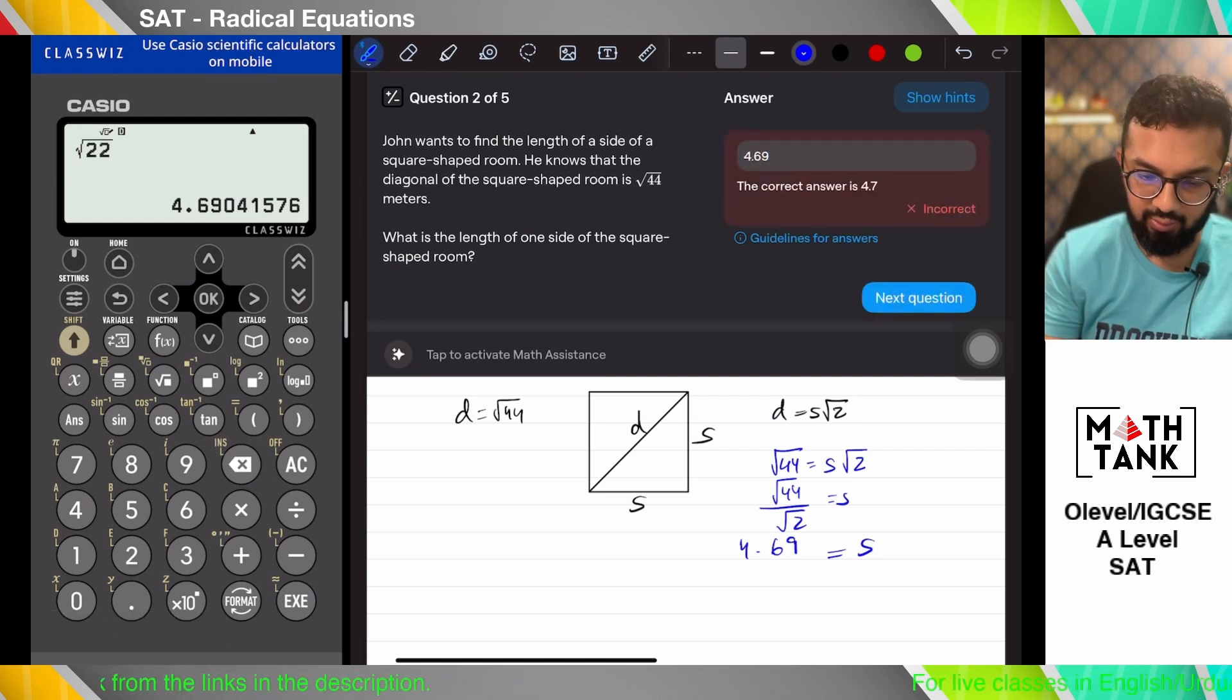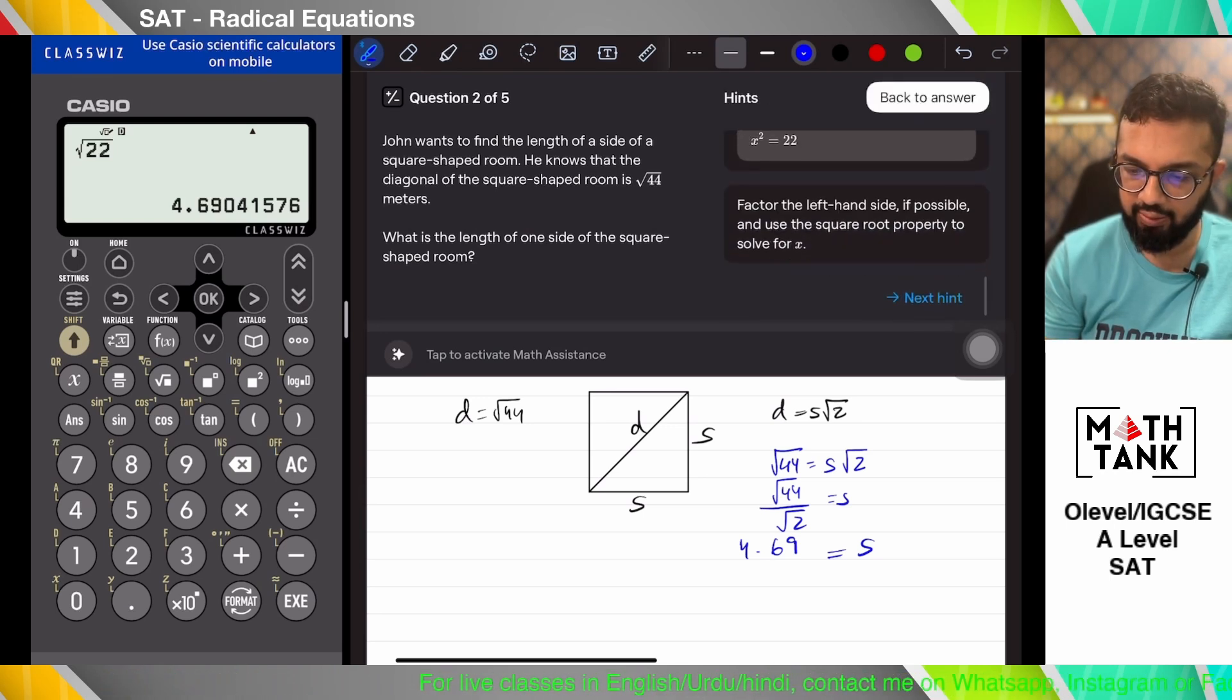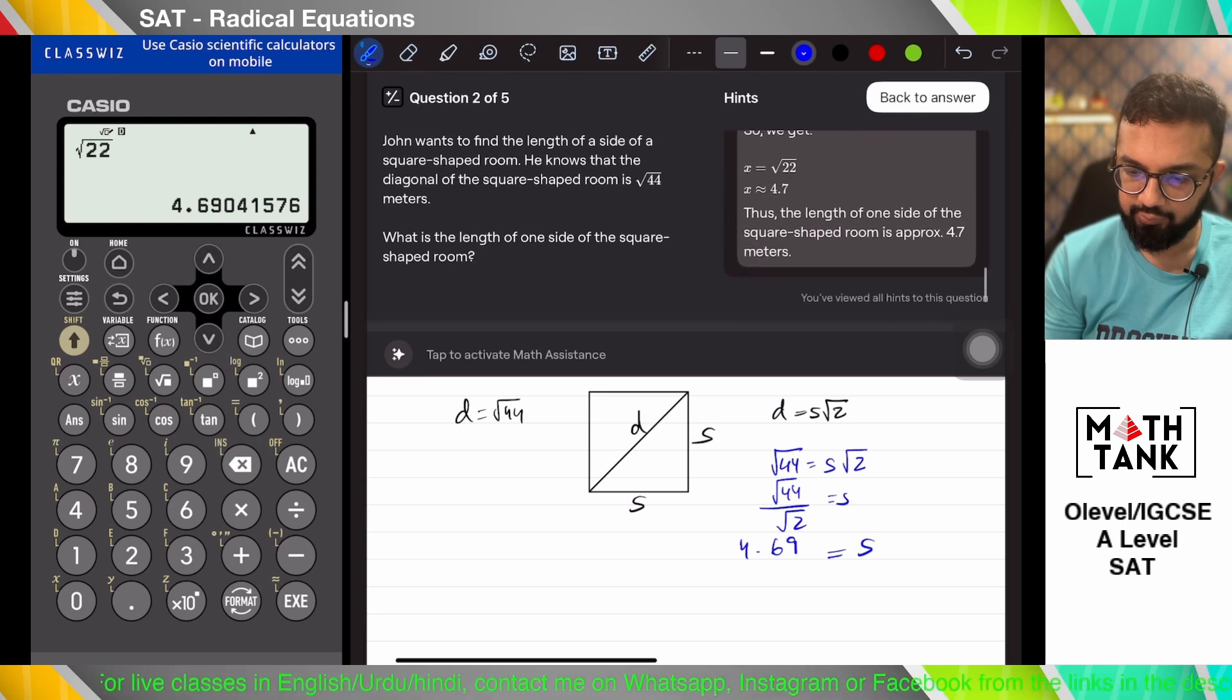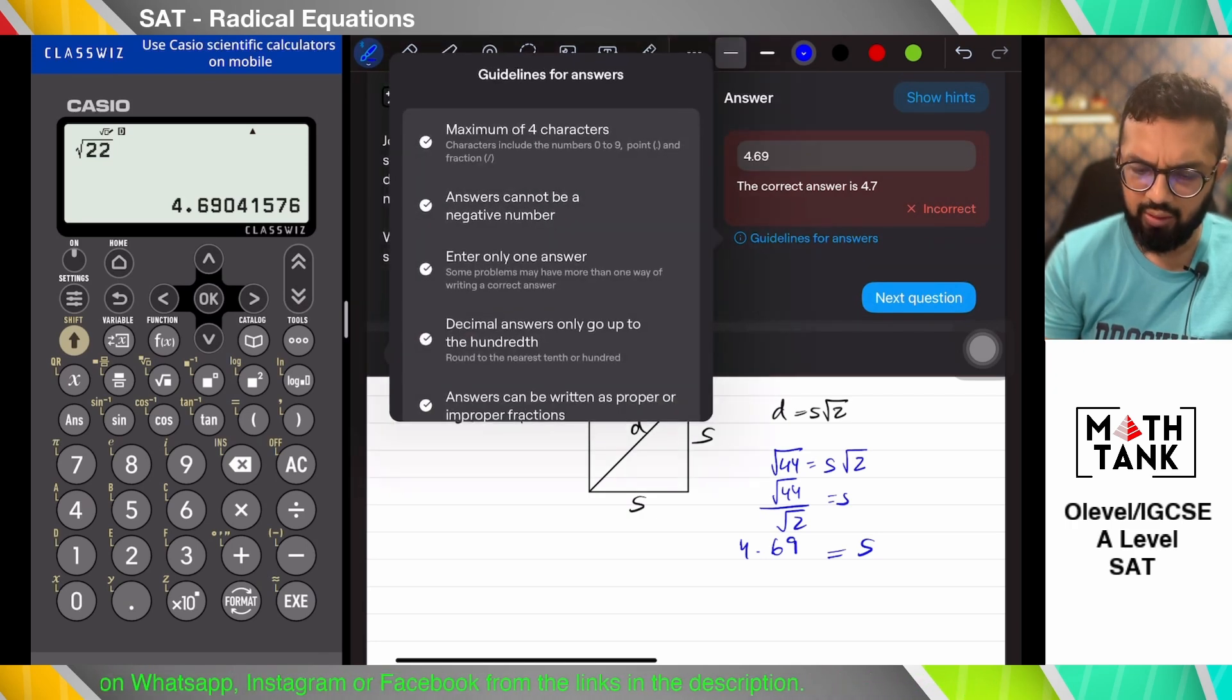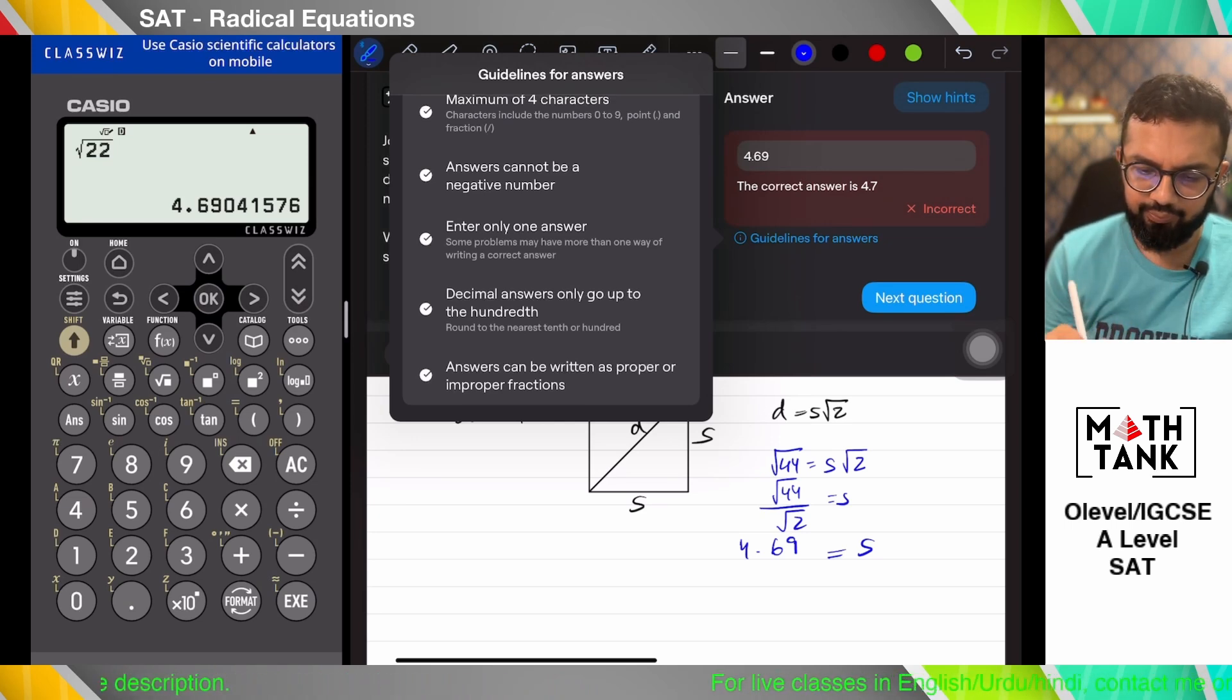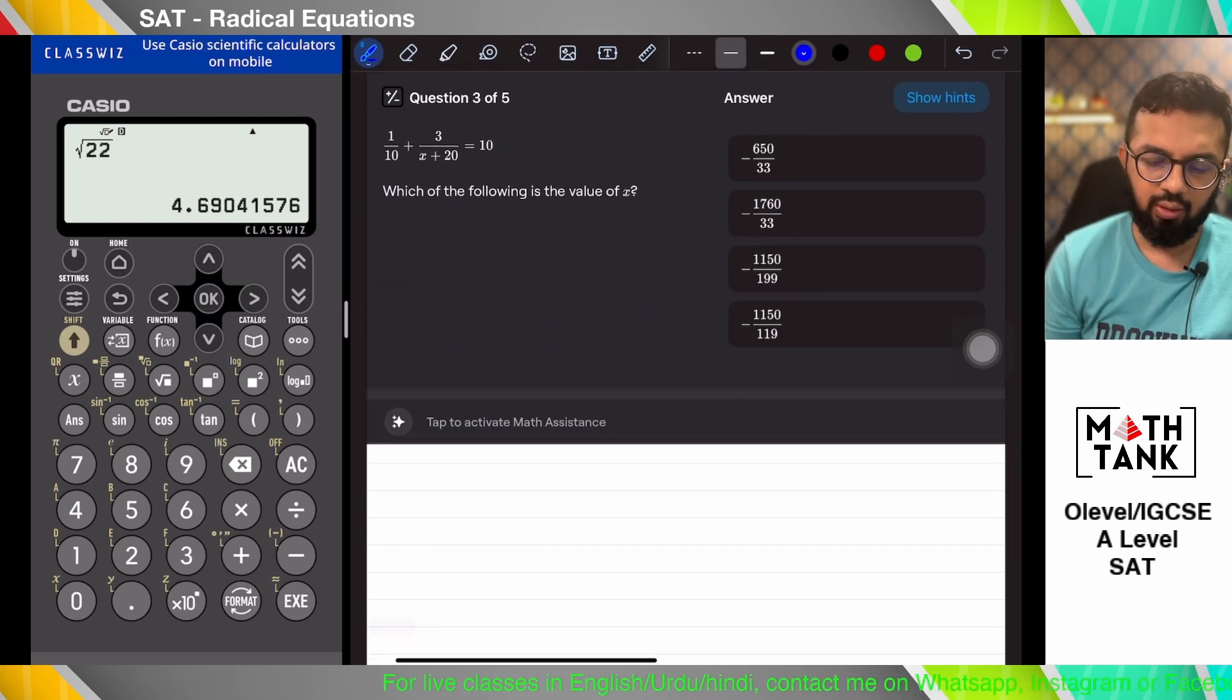It says 4.7, although it doesn't say what number I have to round off. So let's see what it says here. Okay, this is a round of decimal answers only go up to the hundreds. Which is fine. We'll just write 4.7 in the next answer.